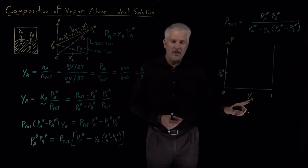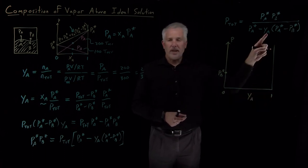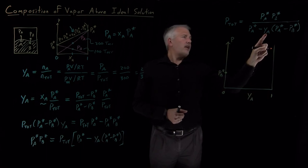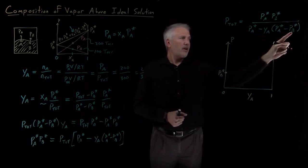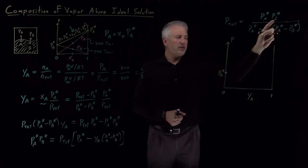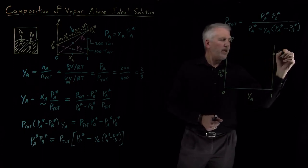On the other hand, if all of the vapor is A, if 100 percent of the vapor above that solution is A, because the mole fraction is 100 percent, if Y sub A is equal to one, then this negative one times PA star is going to cancel this PA star, negative one times negative PB star, that PB star cancels this PB star, and all I'm left with is a vapor pressure of A, PA star.